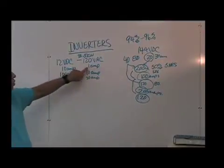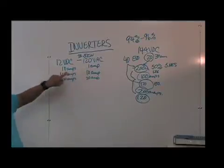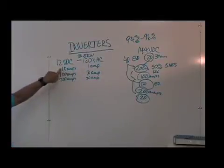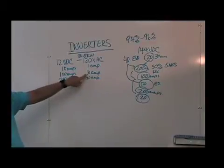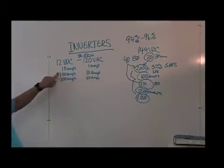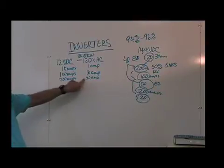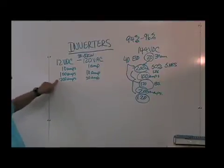If I need 1 amp of AC, I have to draw 10 amps of DC. If I need 10 amps of AC, I need to draw 100 amps of DC. If I need 20 amps of AC, now I need to draw 200 amps of DC.